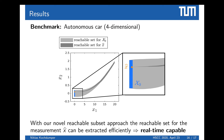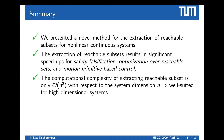In summary, we presented a novel method for extracting reachable subsets for non-linear continuous systems. We demonstrated on three applications — falsification, optimization over reachable sets, and motion primitive-based control — that the new method results in significant speedups. These three applications are not the only ones our method is useful for; there may be many others. Finally, our approach scales very well with system dimension, having only quadratic complexity with respect to system dimension, making it well-suited for high-dimensional systems as demonstrated by the 12-dimensional quadrocopter benchmark.